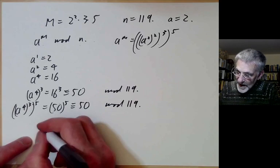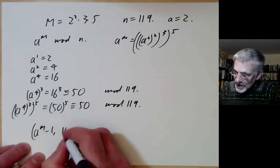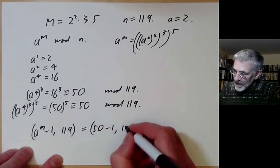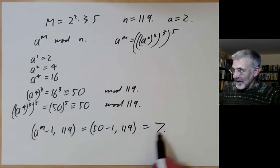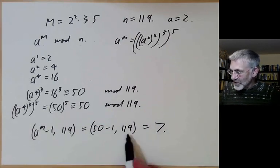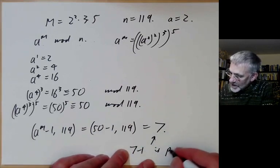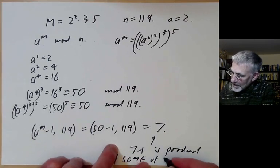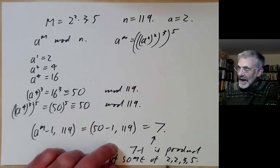Here we've got a to the m. So a to the m minus 1, the greatest common divisor with 119 is 50 minus 1, 119, which turns out to be 7. So we found a factor of 119. And the key point is 7 minus 1 is a product of some of the numbers 2, 3, and 5 that we're dividing m.